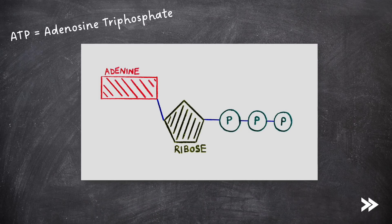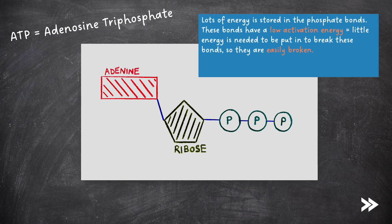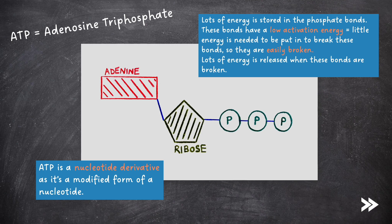ATP stands for adenosine triphosphate — make sure that you can spell this correctly in an exam. ATP consists of an adenine, which is bound to the 5' end of a ribose pentose sugar, which is attached to three phosphate groups. Lots of energy is stored in the phosphate bonds. These bonds have a low activation energy, meaning that little energy is needed to break them, so they are easily broken, and lots of energy is released when these bonds are broken. ATP is considered a nucleotide derivative, as it's a modified form of a nucleotide.